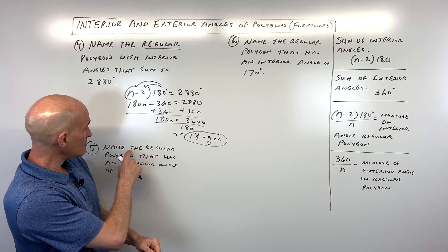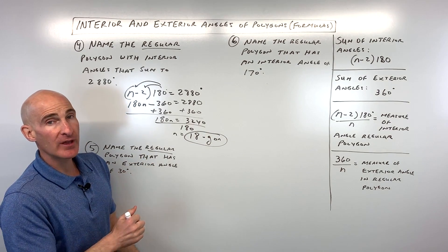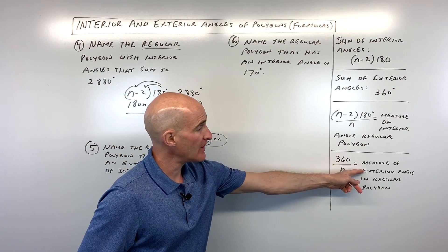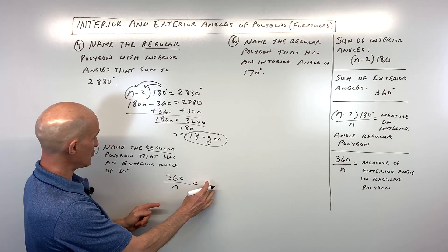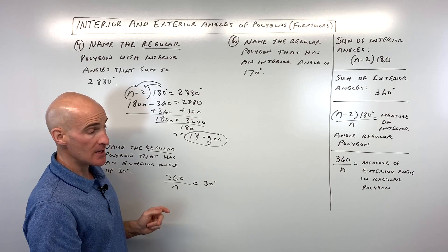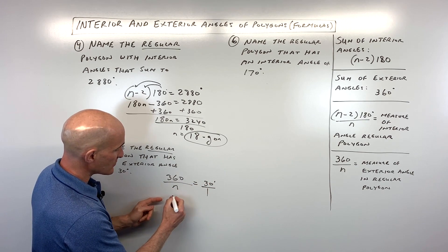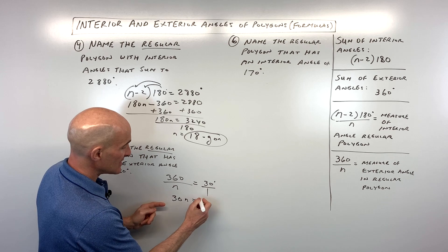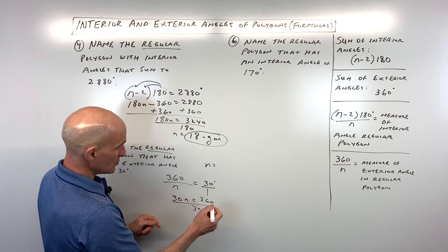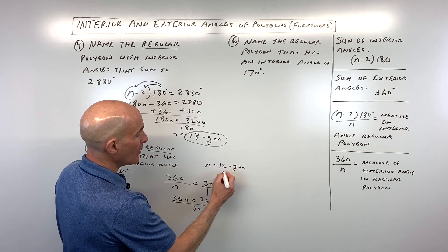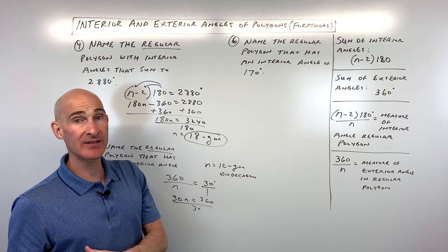Number 5: name the regular polygon that has an exterior angle of 30 degrees. Using the formula 360 divided by n equals the exterior angle, we get 360/n = 30. Cross-multiplying gives 30n = 360, and dividing both sides by 30 gives n = 12. So this is a 12-gon, also called a dodecagon — a decagon has 10 sides, and a dodecagon has 12.